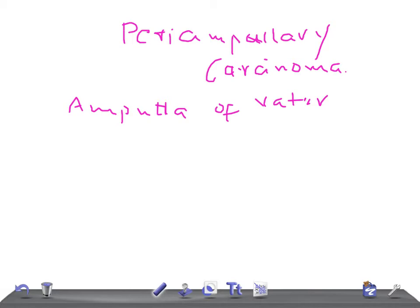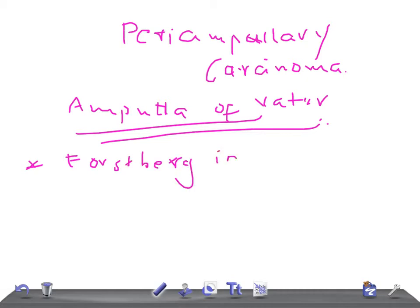Very important is the Frostberg inverted 3 sign - you'll see it on ERCP. Just Google the images, guys. Very important to look at the images to remember for a longer time. I cannot upload images here due to copyright issues. Which is the most important cancer? Cancer of the head of the pancreas. Double duct sign.